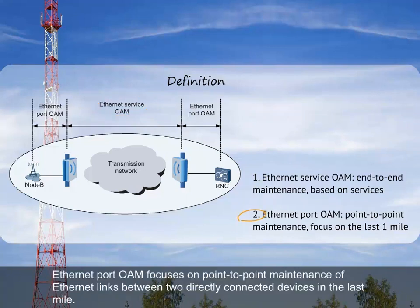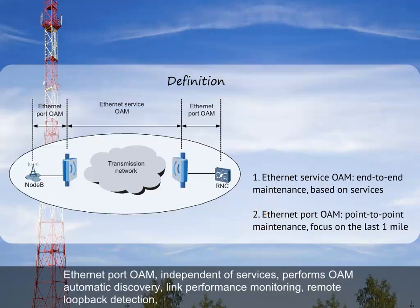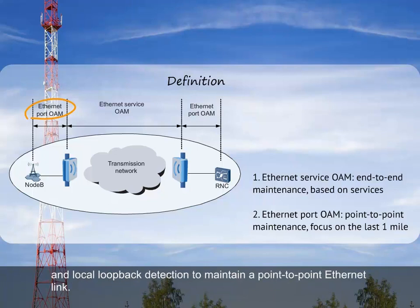Ethernet port OAM focuses on point-to-point maintenance of Ethernet links between two directly connected devices in the last mile. Ethernet port OAM, independent of services, performs OAM automatic discovery, link performance monitoring, remote loopback detection, and local loopback detection to maintain a point-to-point internet link.